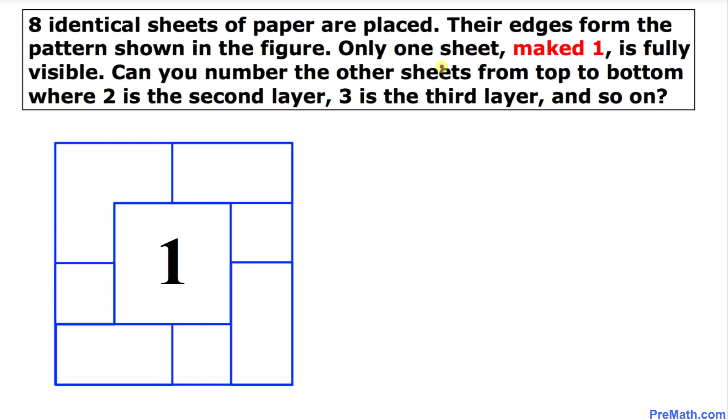Only one sheet, marked number one, is completely visible. Can you number the other sheets from top to bottom where two is going to be the second layer, three is going to be the third one, and so on?